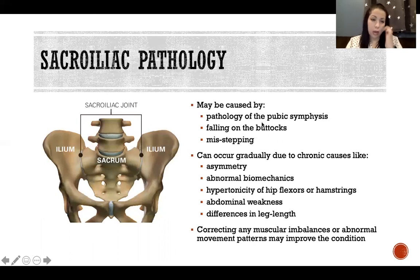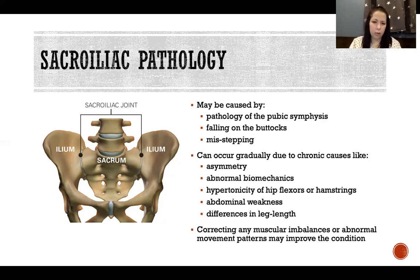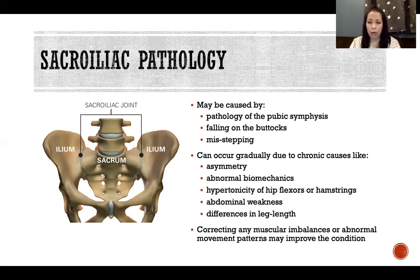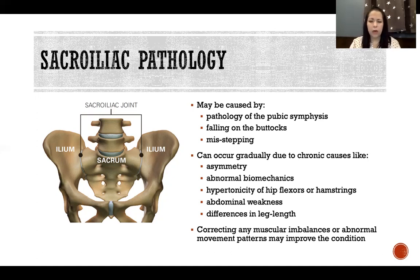Sacroiliac pathology can be caused by a variety of things. Pathology of the pubic symphysis — such as injury during childbirth or the effects of the hormone relaxin during pregnancy — can cause that joint to function abnormally, forcing the sacroiliac joint to compensate by becoming hyper- or hypomobile. Acute causes include falling directly on the buttocks or misstepping into a hole, which jolts force through the sacroiliac joint.